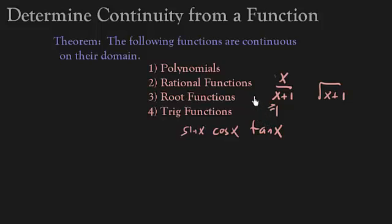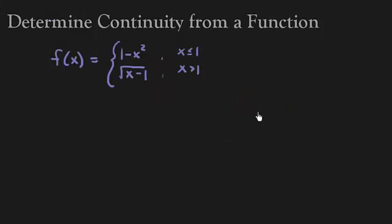So we're going to use this theorem to help us determine continuity. So here's our first example. We have the piecewise defined function f of x, which is 1 minus x squared, when x is less than or equal to 1. And then we have the square root of x minus 1, when x is greater than 1.